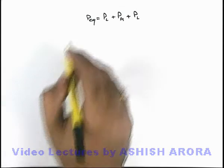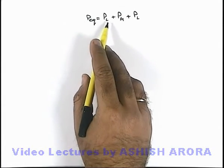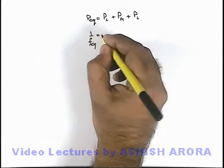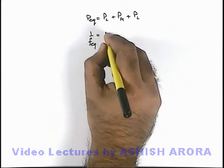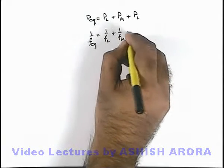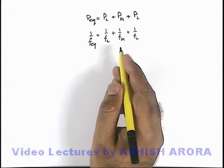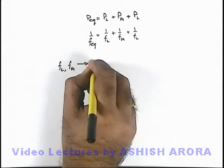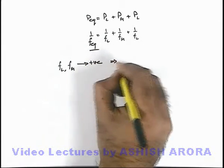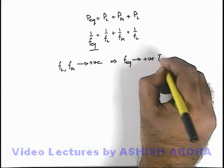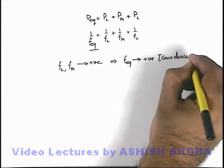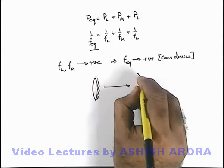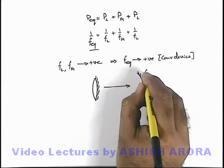The equivalent power of the system is P_L + P_M + P_L. So the equivalent focal length of the equivalent mirror which can replace the system is given as: 1/f_eq = 1/f_L + 1/f_M + 1/f_L. Since the lens is converging and the mirror is converging, both f_L and f_M are taken as positive, which implies f_equivalent will also be positive — indicating a converging device. So this lens system with one side polished can be replaced by a single concave or converging mirror with focal length equal to f_equivalent.